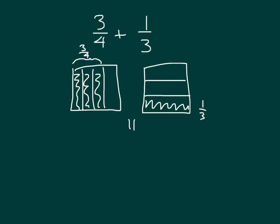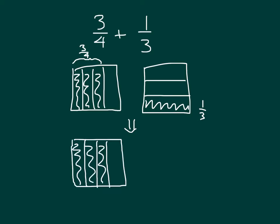When we add them together, we'll make equivalent fractions for 3-4ths and for 1-3rd so that we have the same denominator. We'll start with 3-4ths and divide it into three parts by drawing two horizontal lines. Instead of 3-4ths, we now have 9 shaded parts out of a total of 12. This is 3 rows by 4 columns — 3 by 4 is 12 — and that's the denominator.